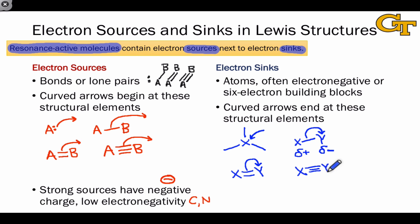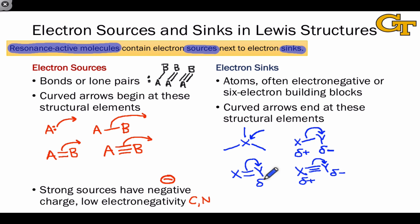In these cases, as in the single bond case, the atom that accepts the electrons is typically the one that's partially negative in the original bond, so that it ends up with a full negative charge — which it's relatively comfortable with because of its electronegativity — in the resulting products.